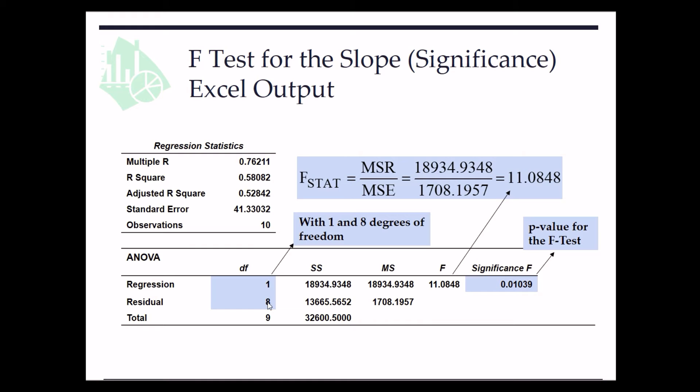denominator df 8. So the F-test statistic is 11.0848 here, and the p-value of the test is 0.01039.